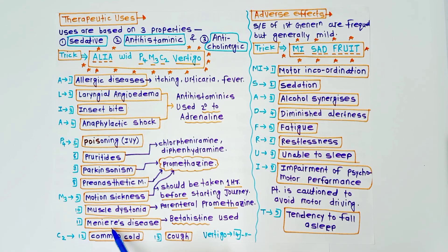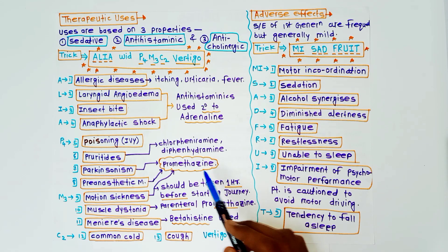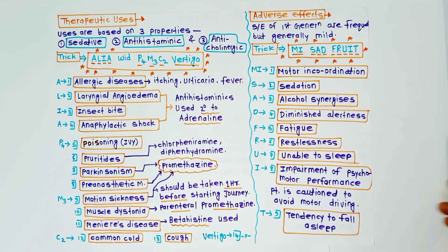And Meniere's disease, in this case betahistine is used. C2, C for common cold, second C for cough. In these cases also chlorpheniramine and diphenhydramine are used. Next is vertigo. Last use is vertigo.